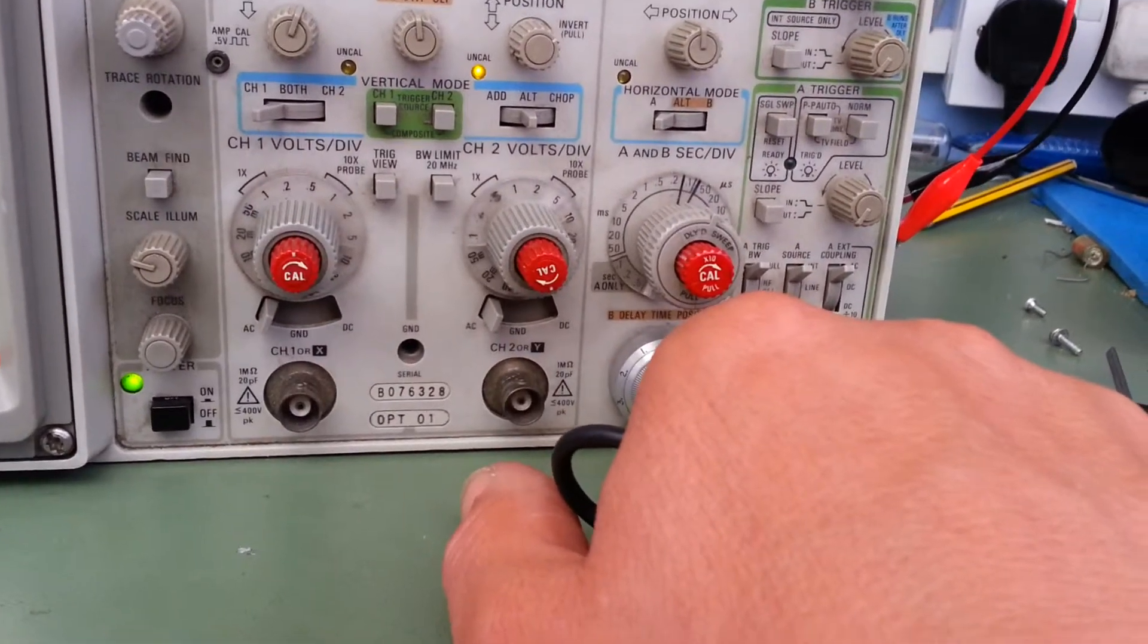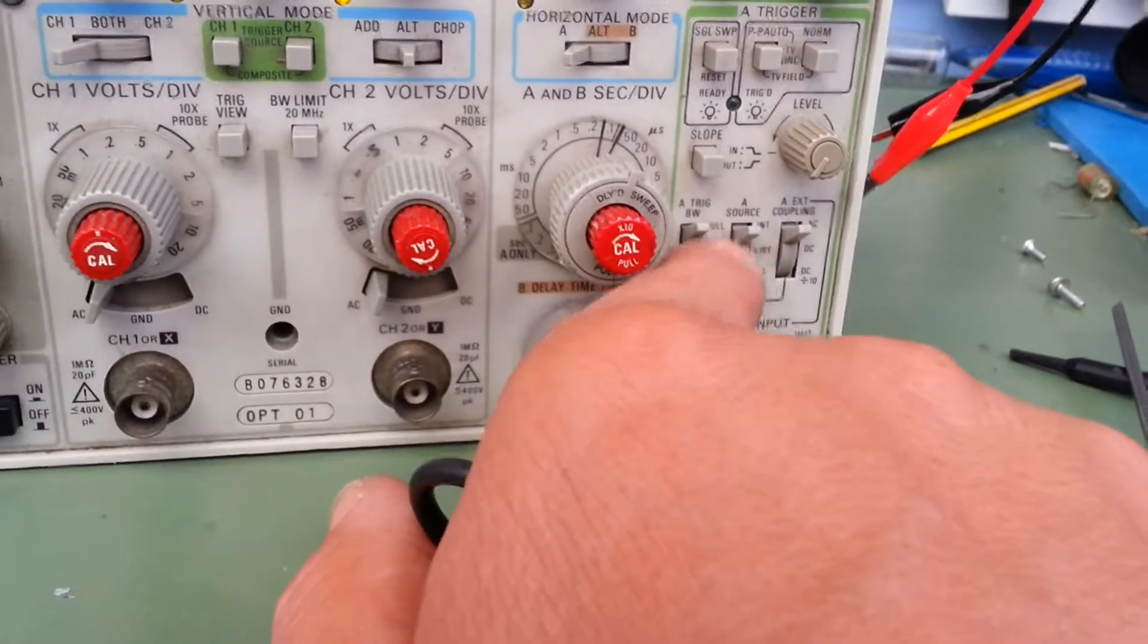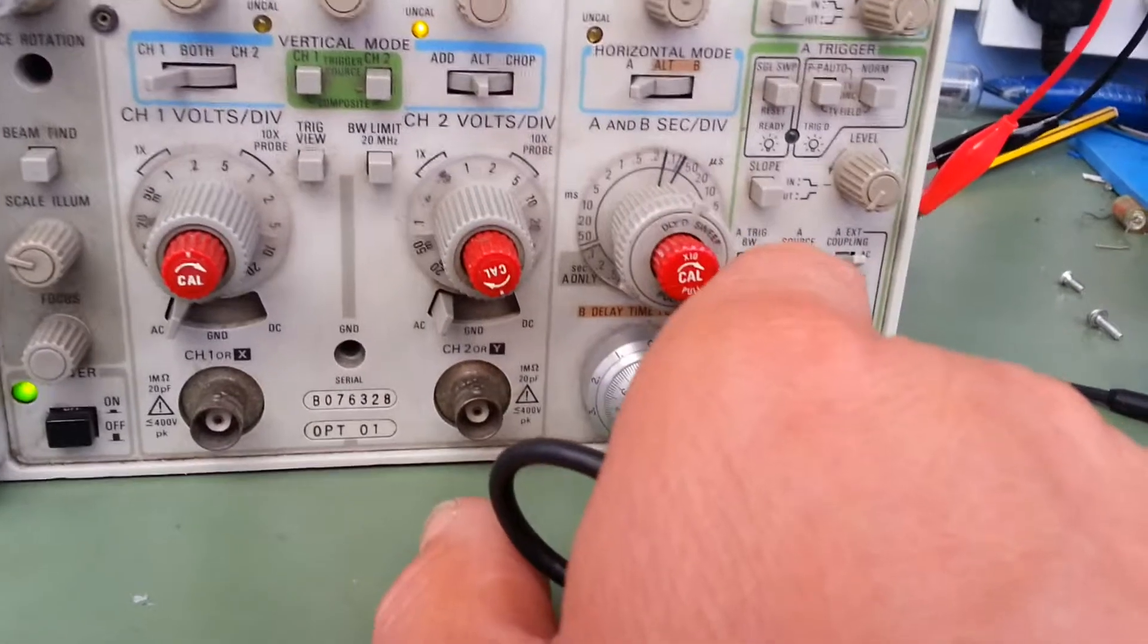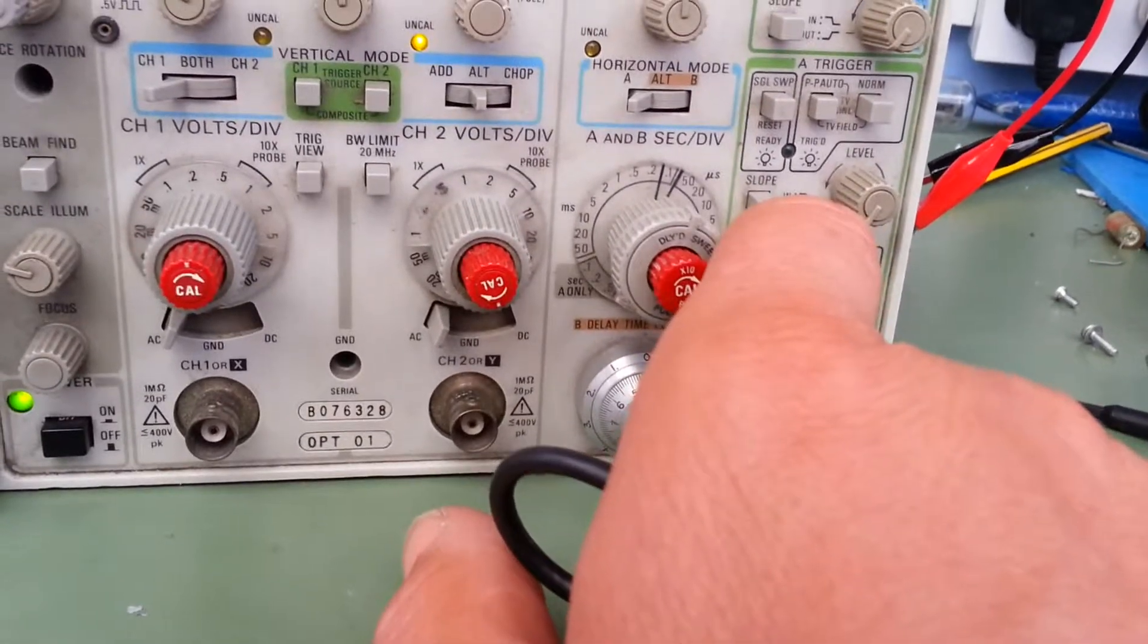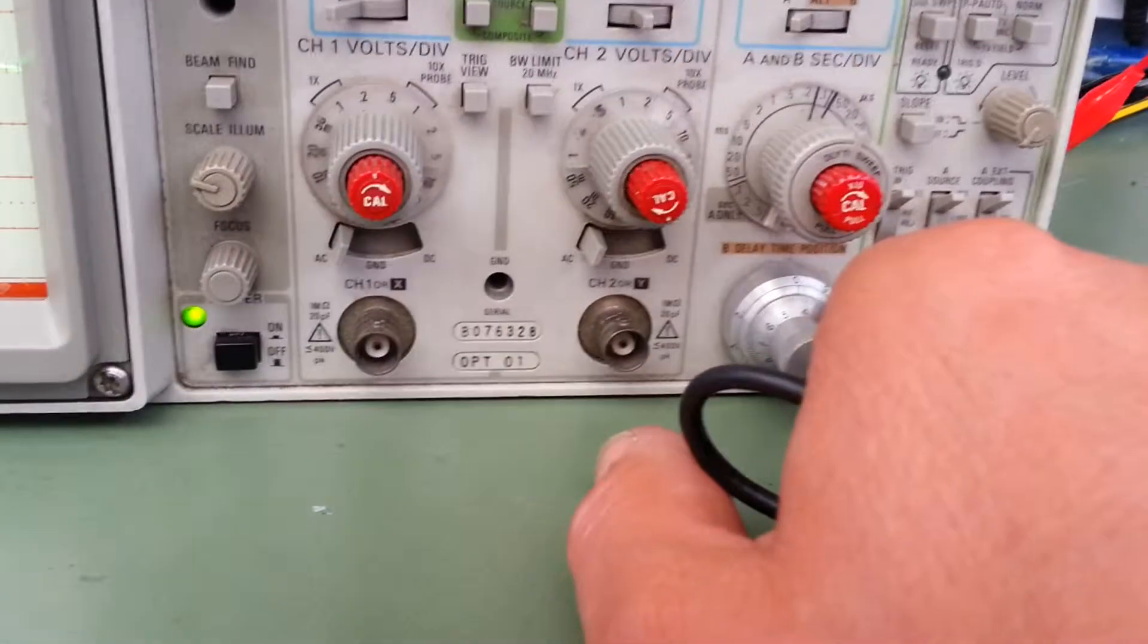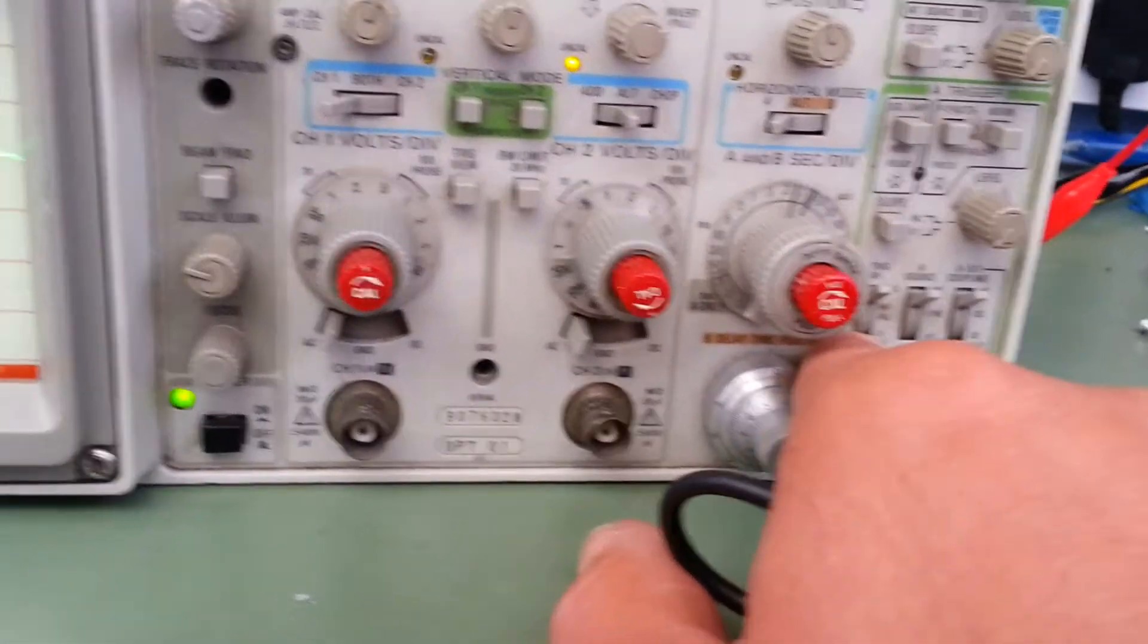And then you've got bandwidth limiting. So you've got full bandwidth. That's basically no filters in the circuit. HF reject which basically puts a low pass filter on. And LF reject which is basically the opposite thing. You know, it will let high frequency through but ignore any sort of low frequency stuff.